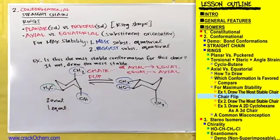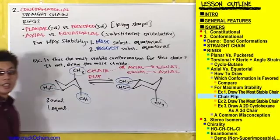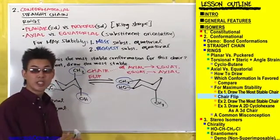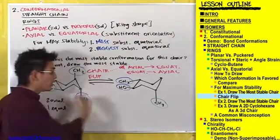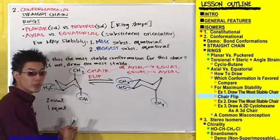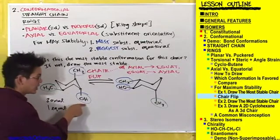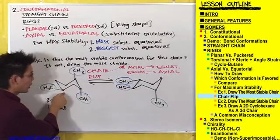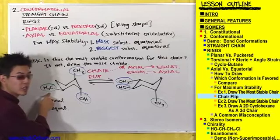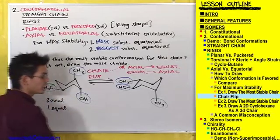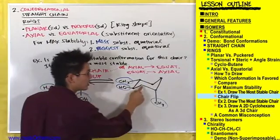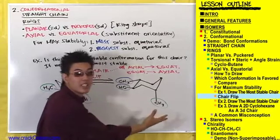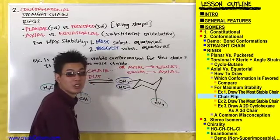If you want to double-check yourself, you can also check the relation of the other substituents. For example, this OH is two carbons away from this CH3 in this conformation, so you want to make sure that this OH is two carbons away from this CH3 in this conformation also.